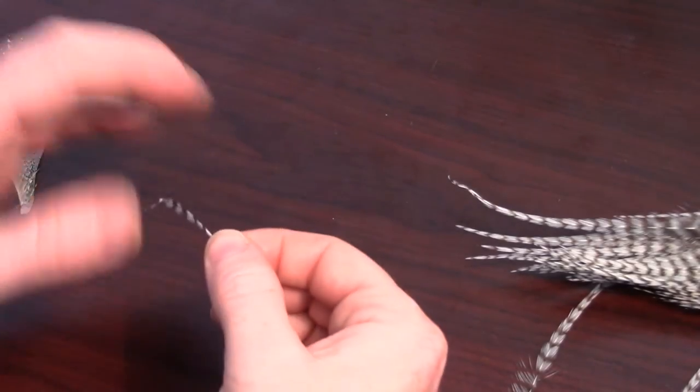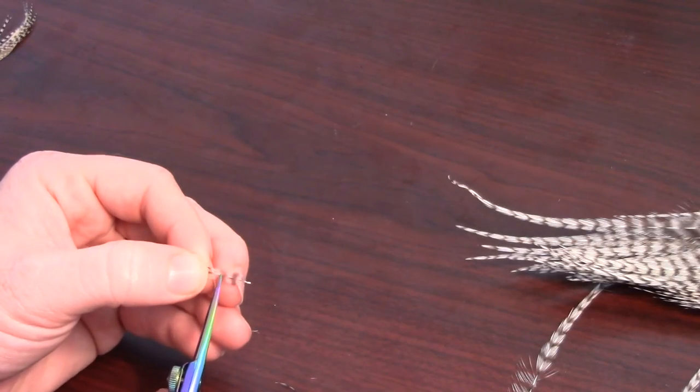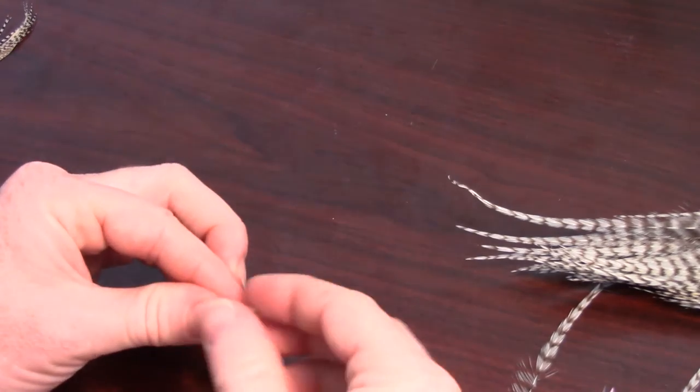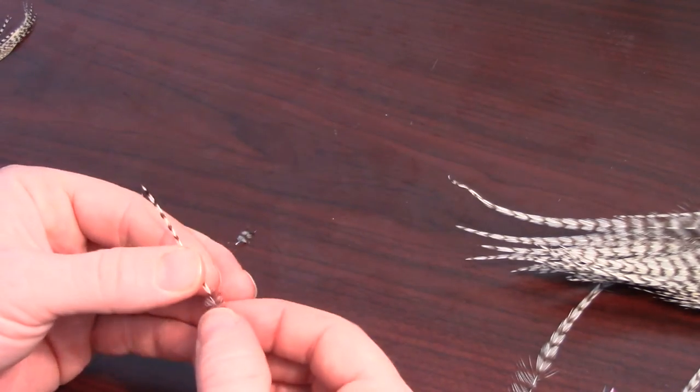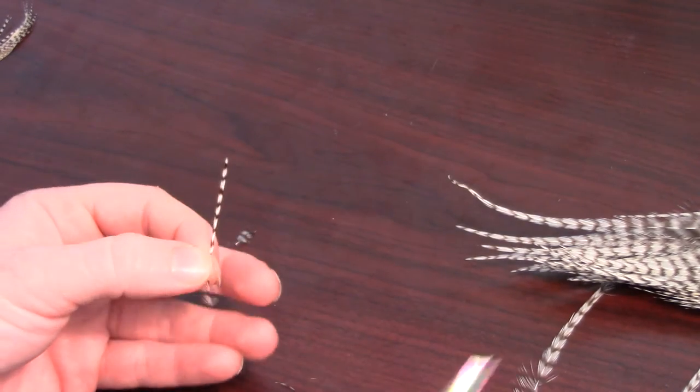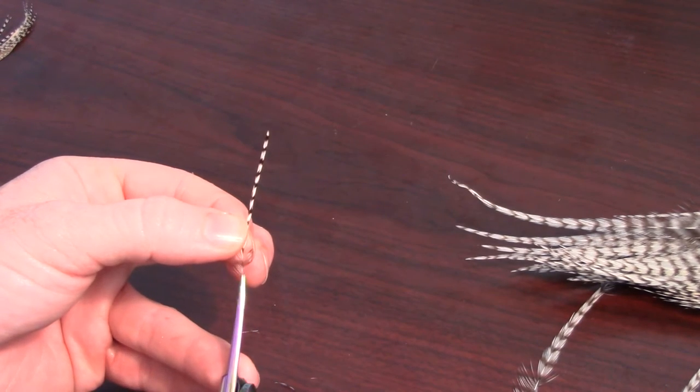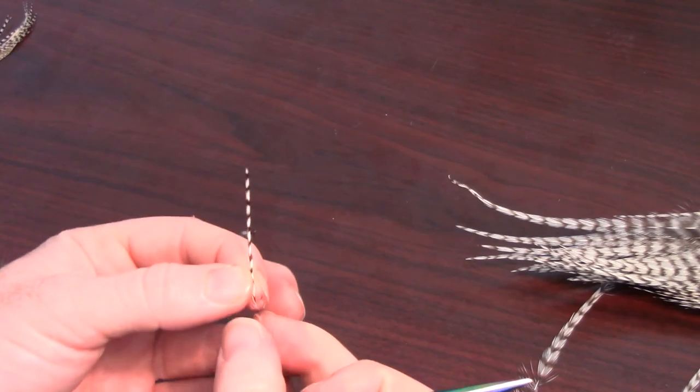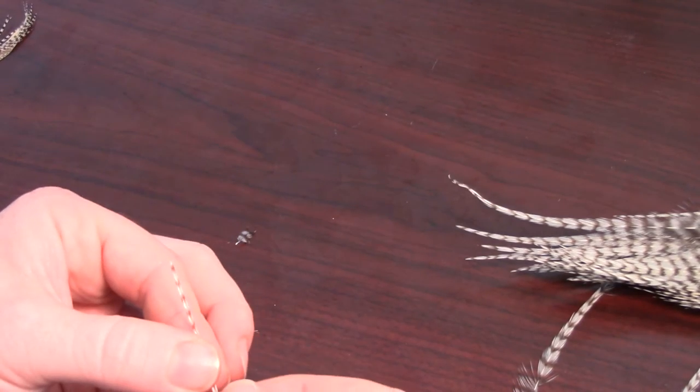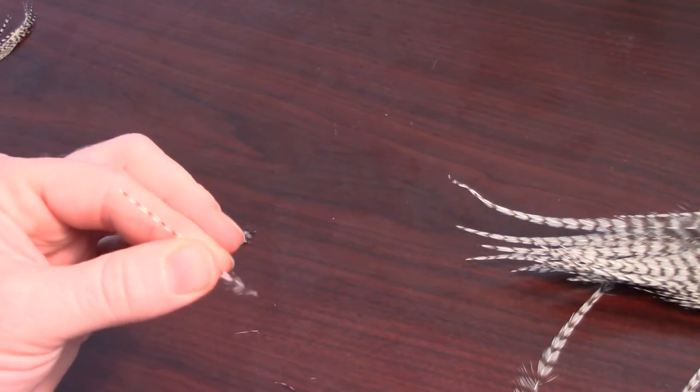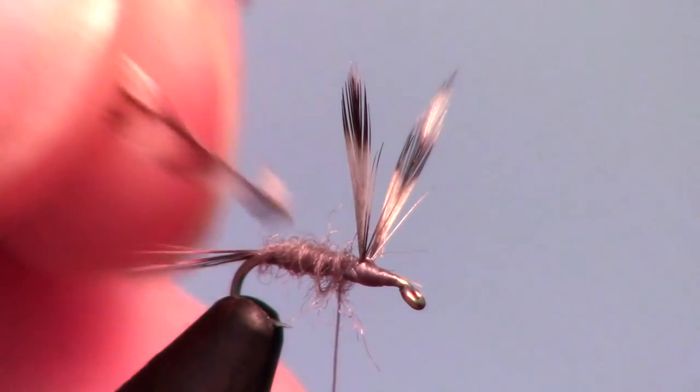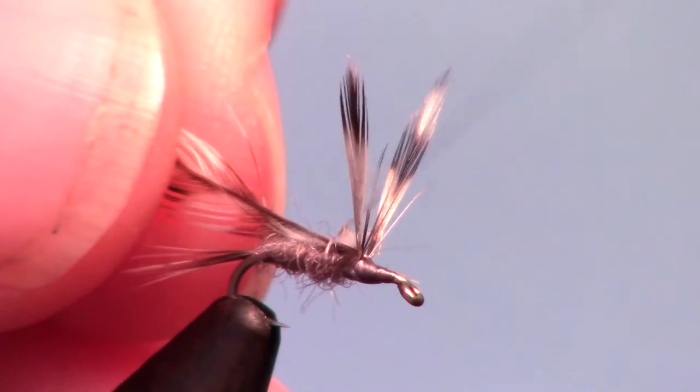Now pull an appropriate size grizzly hackle and snip off the section you don't need. Then pull back the fibers and trim off a few fibers on both sides. Now pull off a few of the fibers right past the trim on the top side. Tie this hackle in just behind the wings.